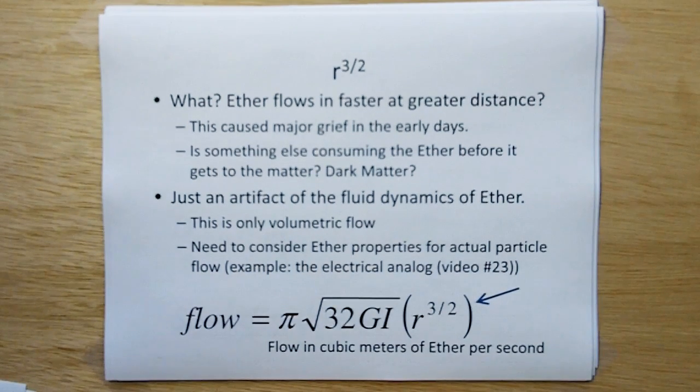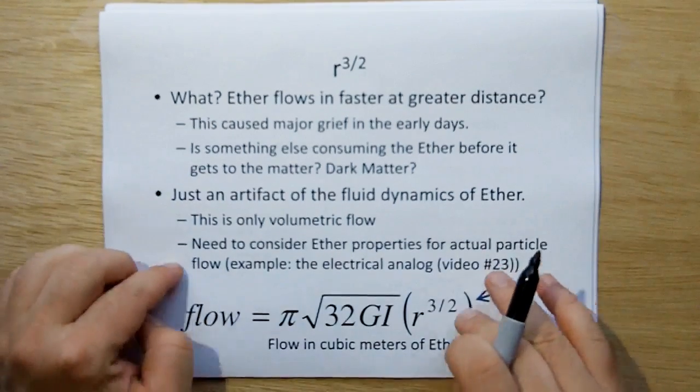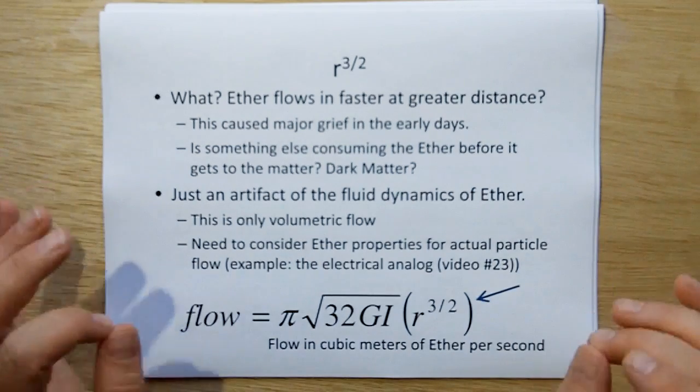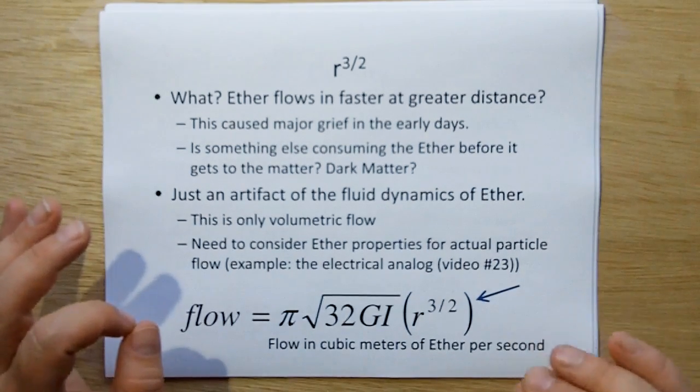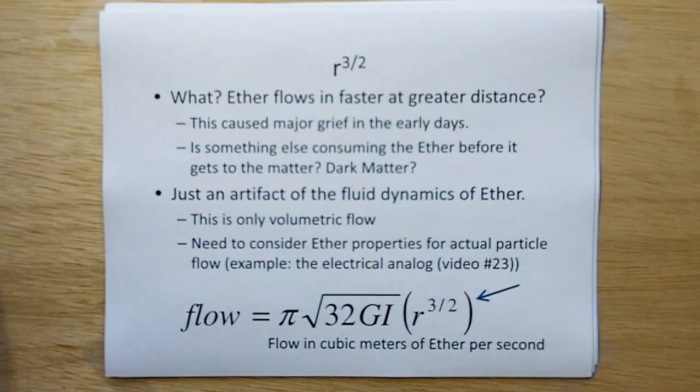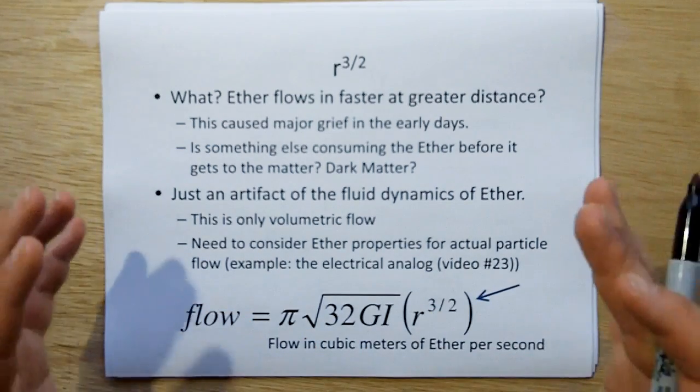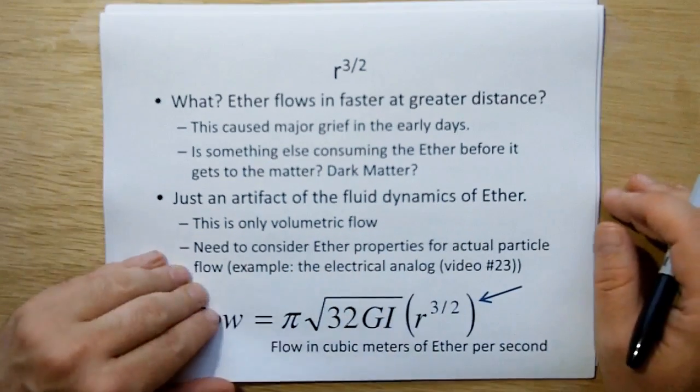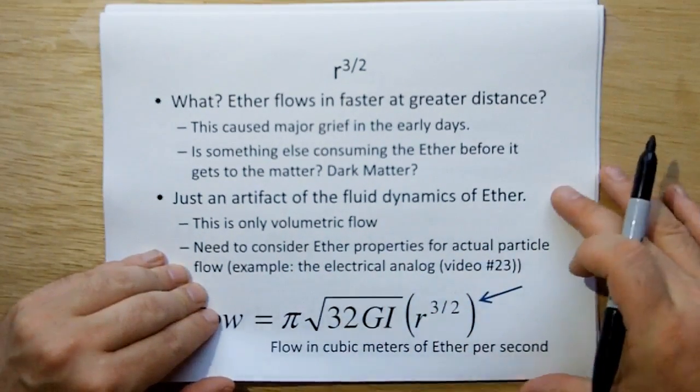Is something else consuming matter before it gets to the, you know, is it dark matter, blah, blah, blah, blah? Well, it turns out this is just an artifact of the fluid dynamics of ether. This is only volumetric flow. We need to consider other ether properties such as density in order to get the proper ether particulate flow, which we got using the electrical analog, which is basically at every distance from the point of consumption, the total particles of ether are going to be the same passing through any sphere. Okay. That's what we got out of the electrical analog of video 23.